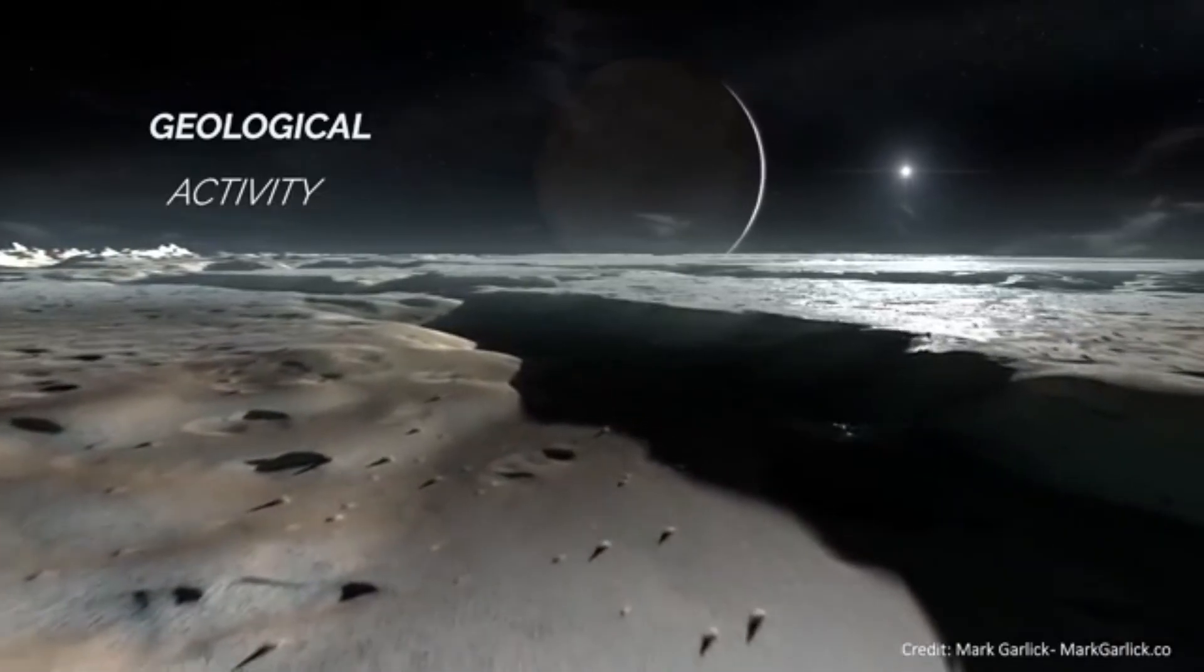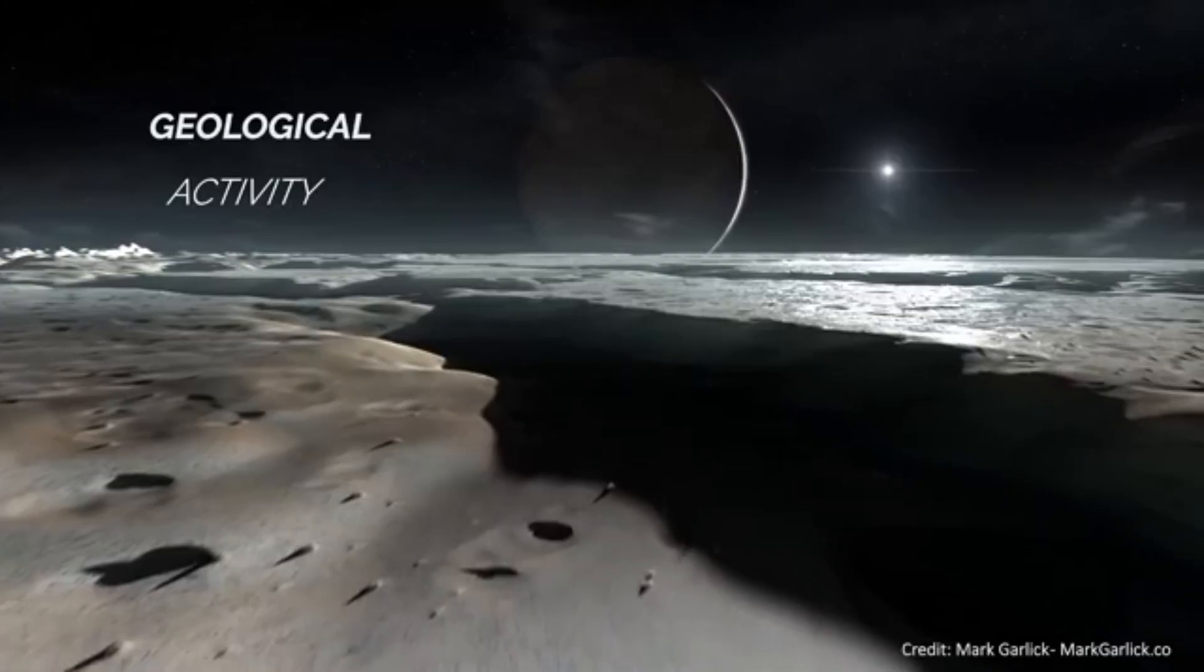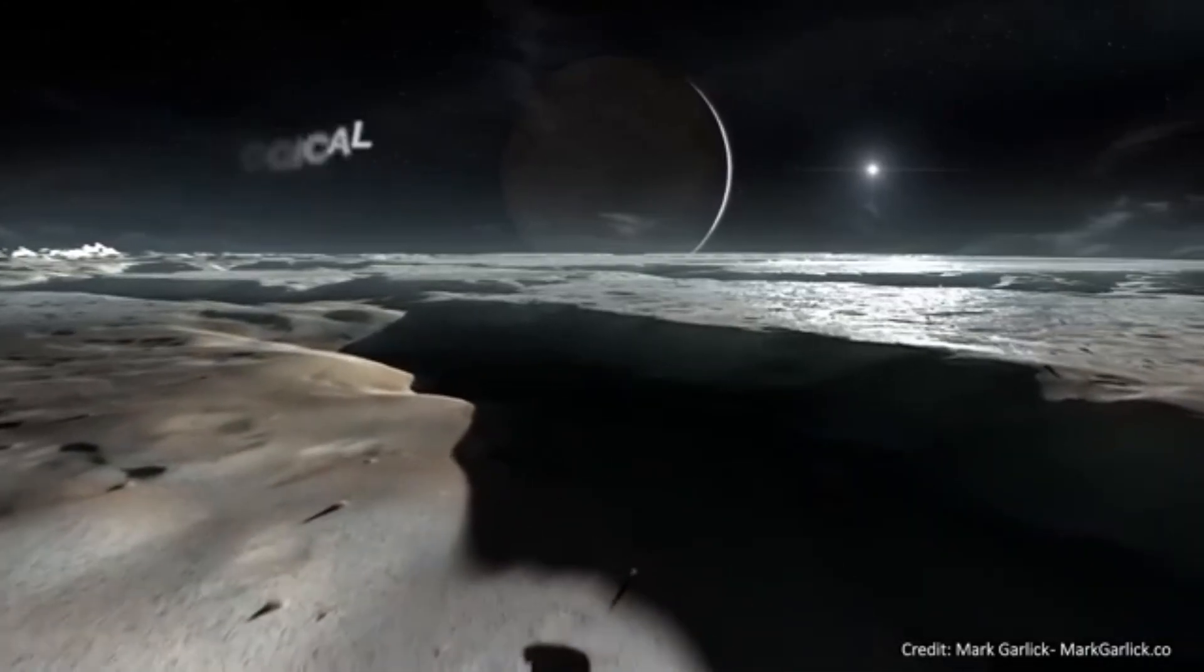In addition, it is a geologically interesting body. Although small, 2,377 kilometers in diameter, it features nitrogen glaciers, a tenuous methane atmosphere, mountains of ice, and possibly a subsurface ocean.